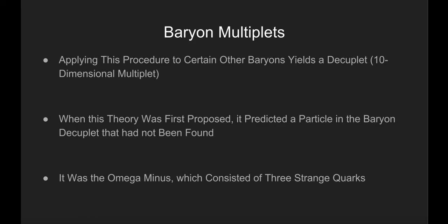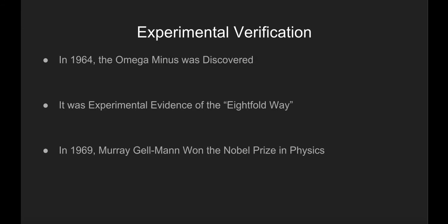It was a baryon called the omega minus that consisted of three strange quarks. When it was discovered a few years later, it was considered experimental evidence for the theory, and Murray Gell-Mann won the 1969 Nobel Prize in Physics.